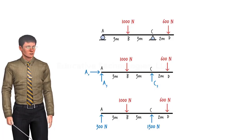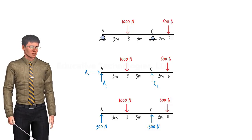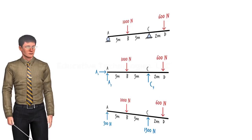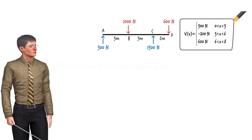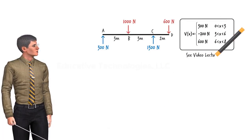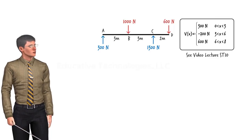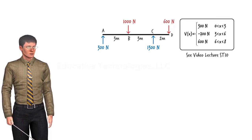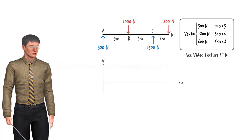The free body diagram of the beam can be drawn, which enables us to write the static equilibrium equations and solve them for the unknown support reactions. Once all the unknown forces are determined, the free body diagram can then be used to formulate the necessary algebraic equations for representing shear in the beam. We talked about shear equations in lecture ST10; if you're not sure how to write them, please review that lecture. Once we have the shear equations, we can then graph them to come up with a shear diagram for the entire beam.